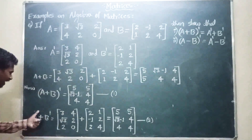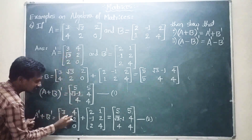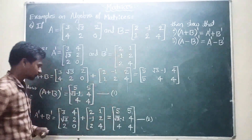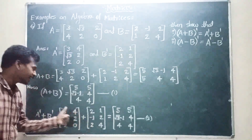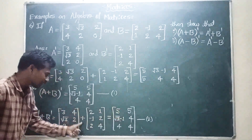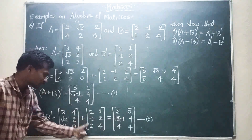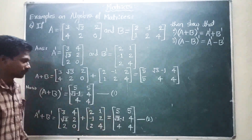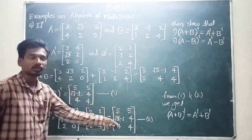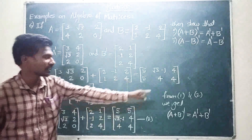Solve A transpose plus B transpose. A transpose matrix plus B transpose matrix: adding corresponding elements gives 3 plus 2 equals 5, 4 plus 1 equals 5, root 3 plus minus 1 equals root 3 minus 1, 2 plus 2 equals 4, 2 plus 2 equals 4, 0 plus 4 equals 4. This is equation number 2. From equation number 1 and equation number 2, they are equal, so A plus B whole transpose equals A transpose plus B transpose.